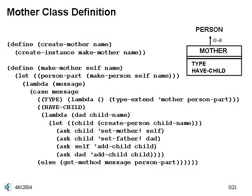Our last class implementation is for mother. This is a relatively simple class, mostly just inheriting from the person class, with the exception of the new have-child method. The job of this method is to create a new child, and then wire up the various family relationships appropriately.